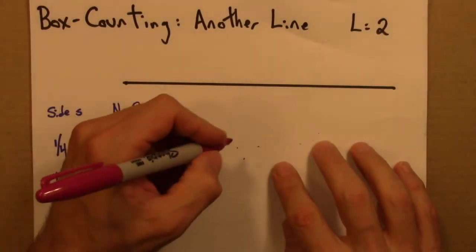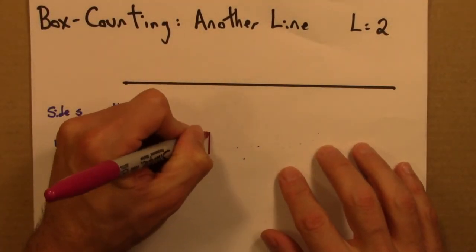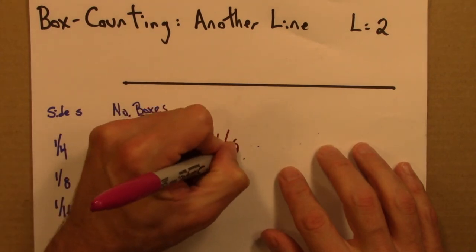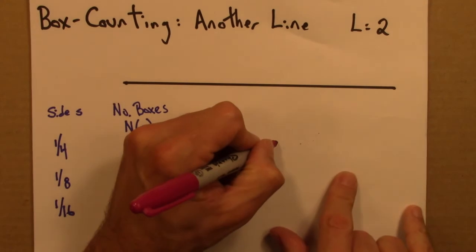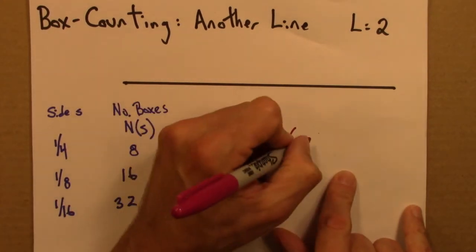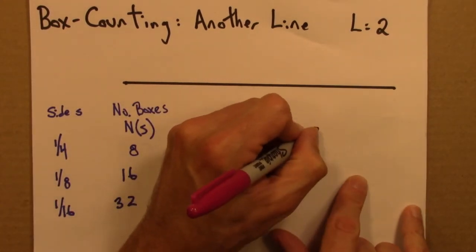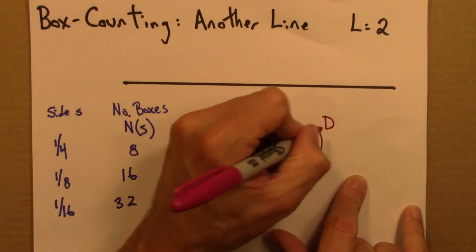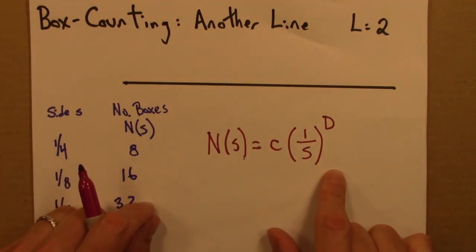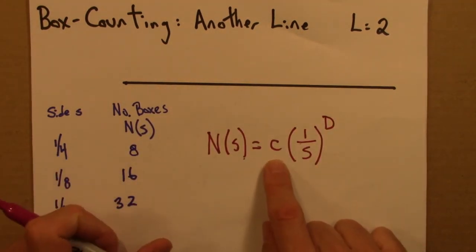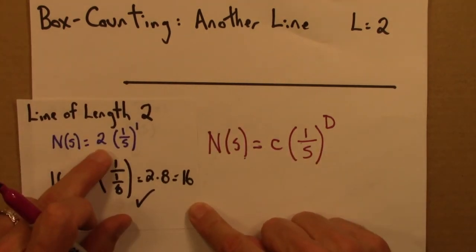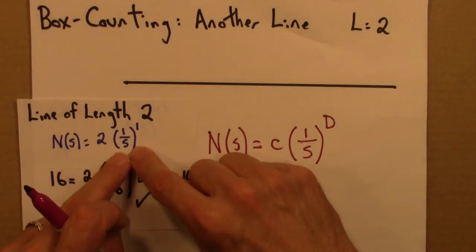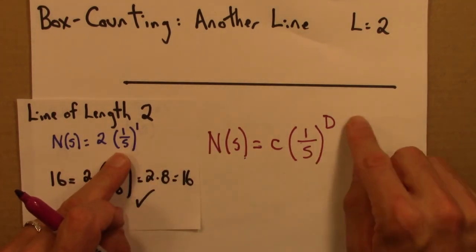So what these three examples suggest is the following: N(s), the number of boxes needed to cover an object, is going to be described by this formula. c is some constant - in the example we just did, the line of length 2, it was 2. We've got 1/s, then raised to the d power.